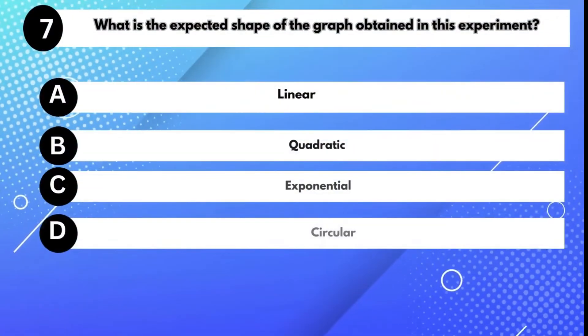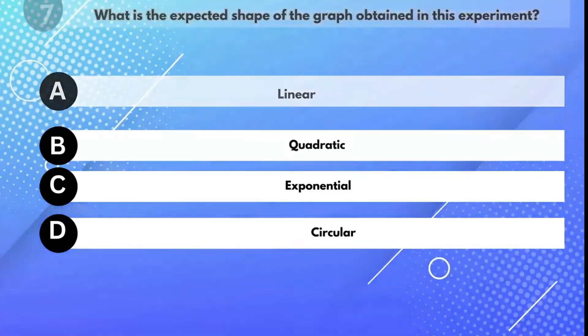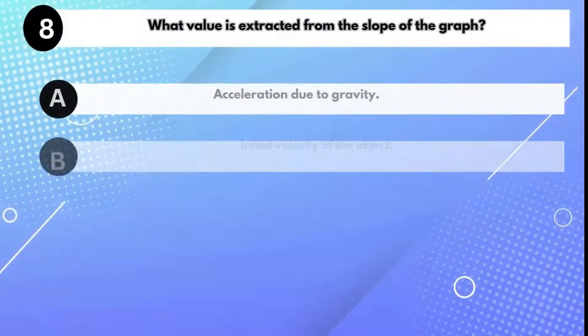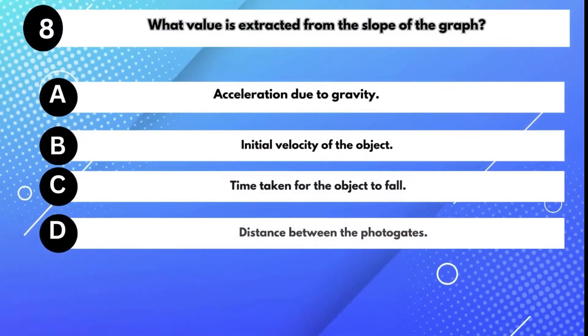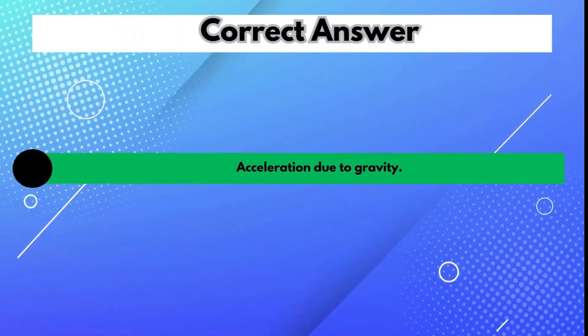What is the expected shape of the graph obtained in this experiment? Answer B: Quadratic. What value is extracted from the slope of the graph? Answer E: Acceleration due to gravity.